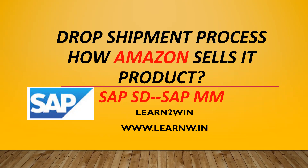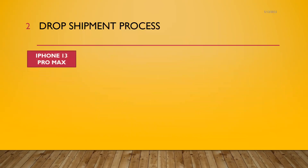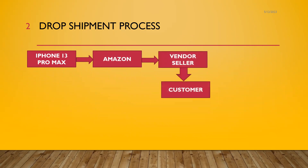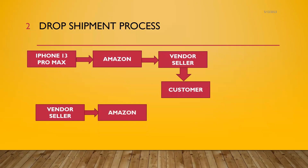Hello everybody, Swaminath here. Today I'm going to show you the drop shipment process — that is how Amazon sells its product to the customer. It gets the material from the vendor and sells it to the customer. The vendor is the seller who sells the product, and Amazon pays the vendor while the customer pays Amazon. This is the drop shipment process.